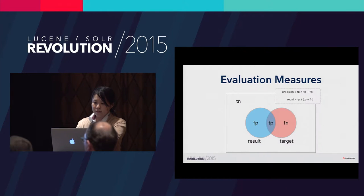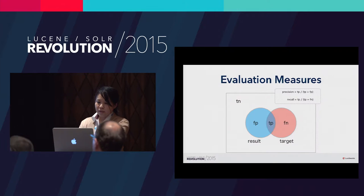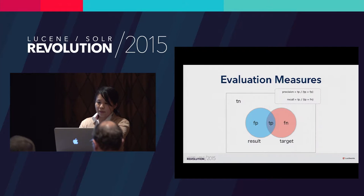If the search engine returns a set like the pink circle, the user is happy and satisfied by the result. But in reality, the search engine cannot fully satisfy you, so it could satisfy your expectation only partially. The blue circle in the rectangle covers a part of the target set. As a result, the inside of the rectangle is separated into four sections, composed of combinations of positive or negative and true or false. Here we have all parameters used in our evaluation measures: precision and recall.